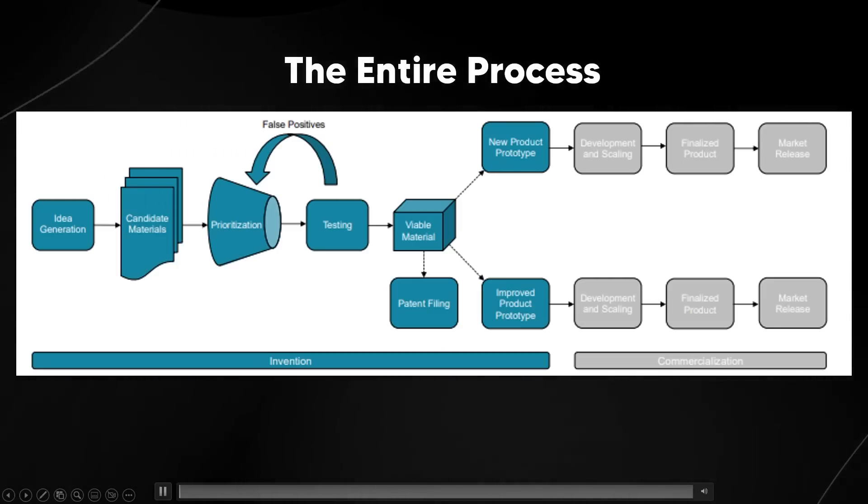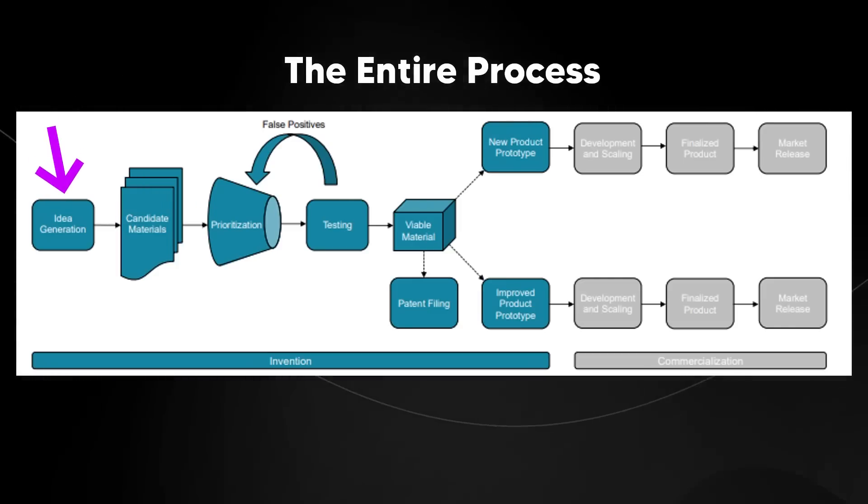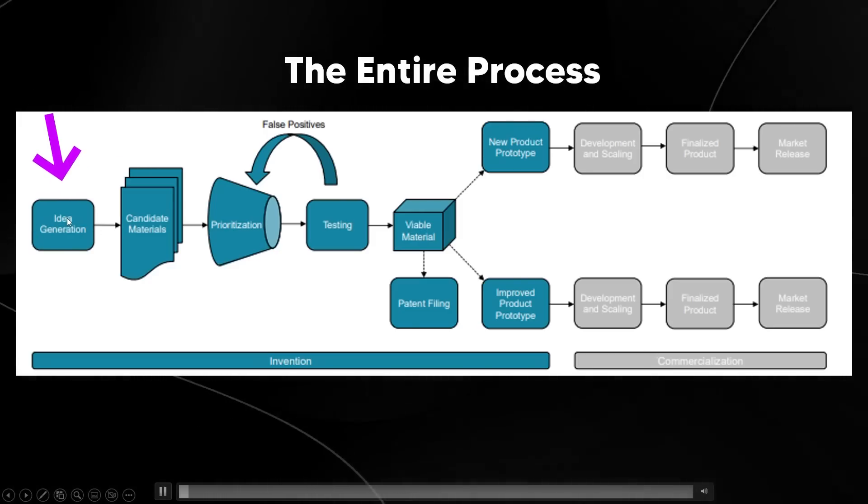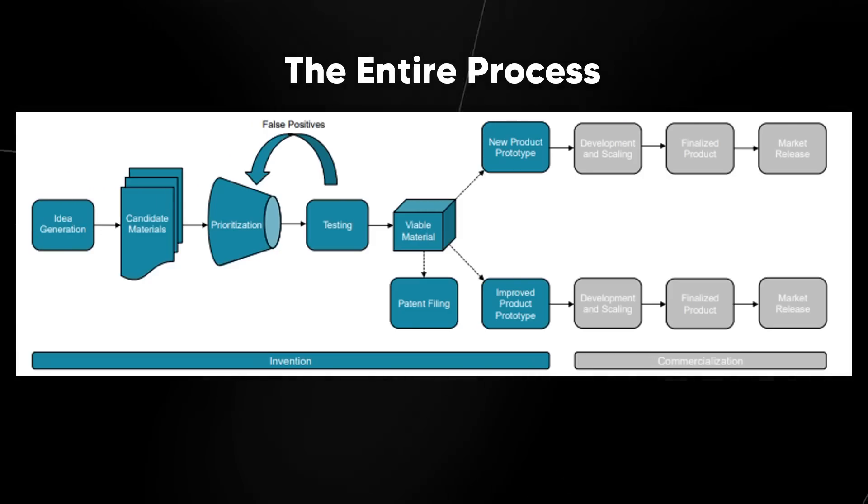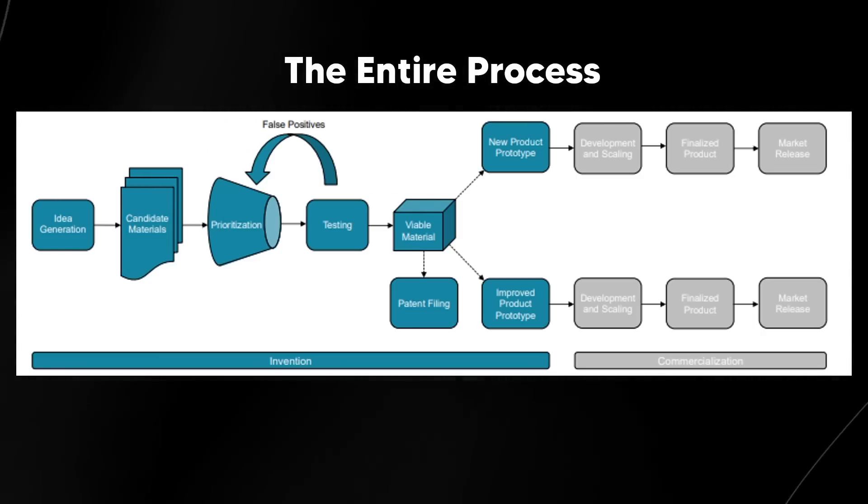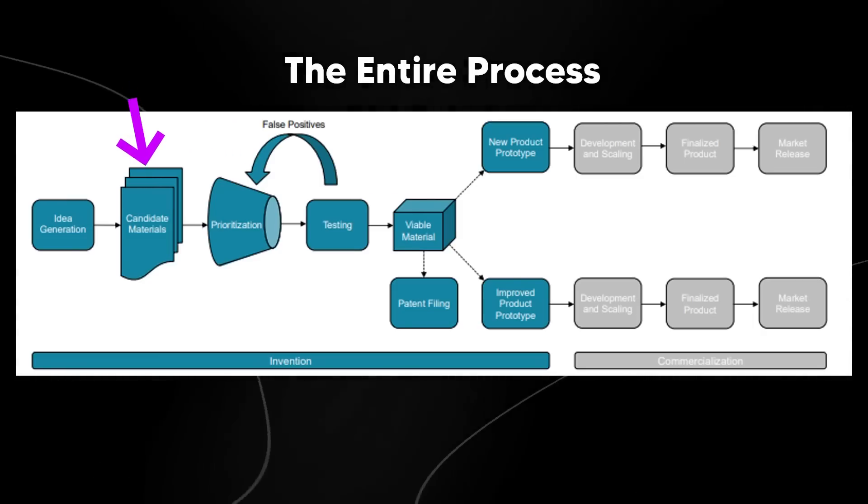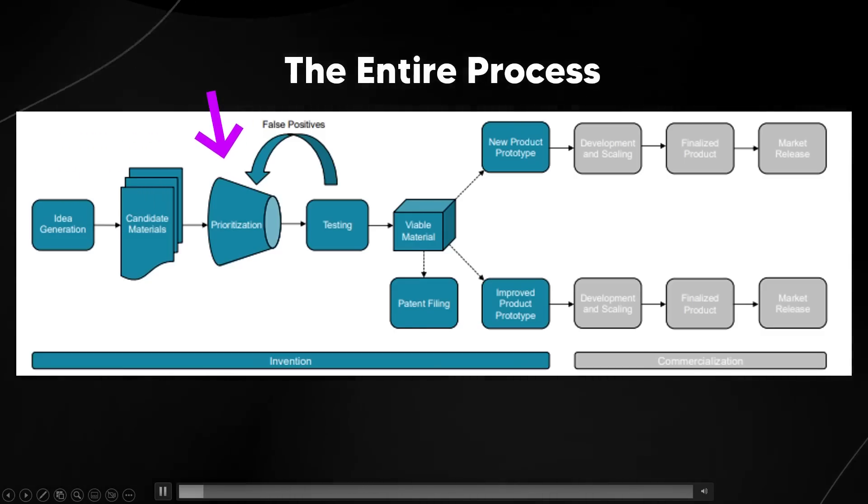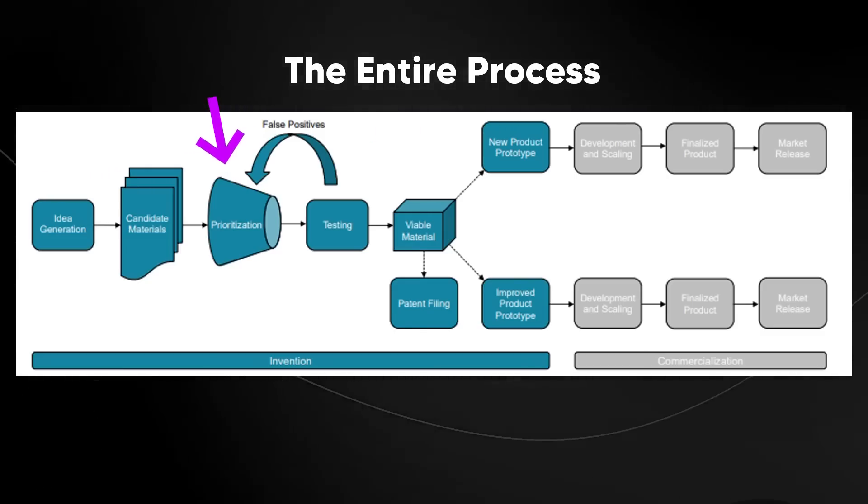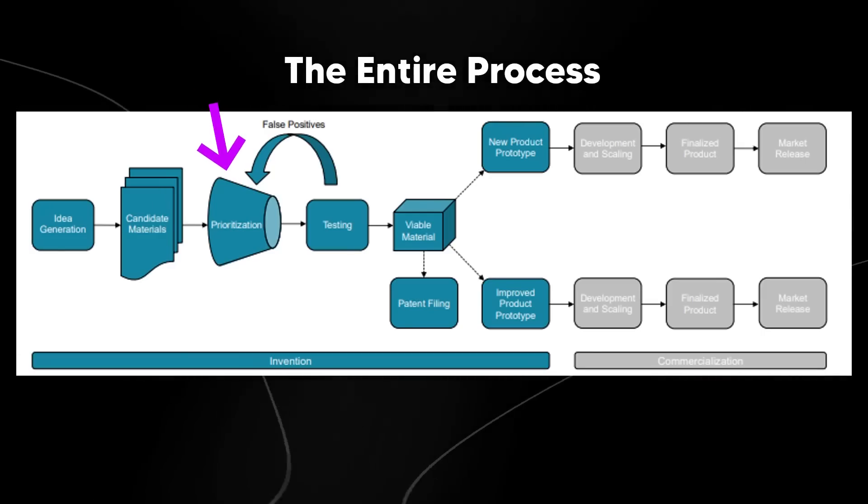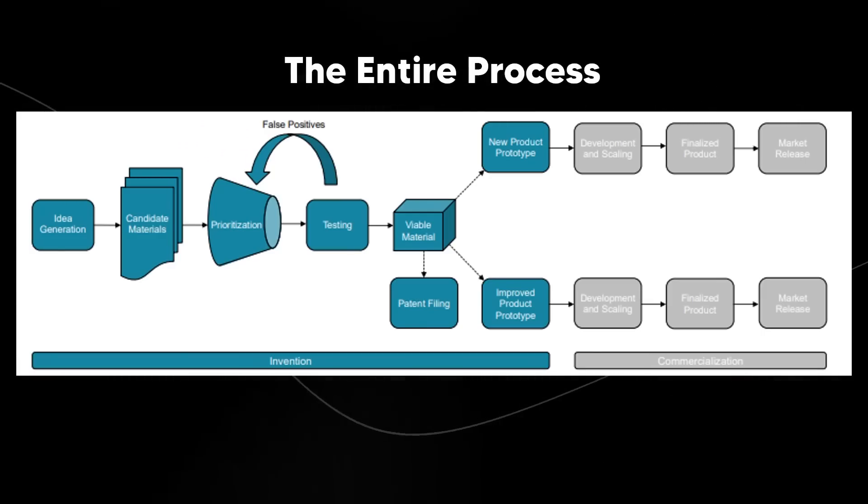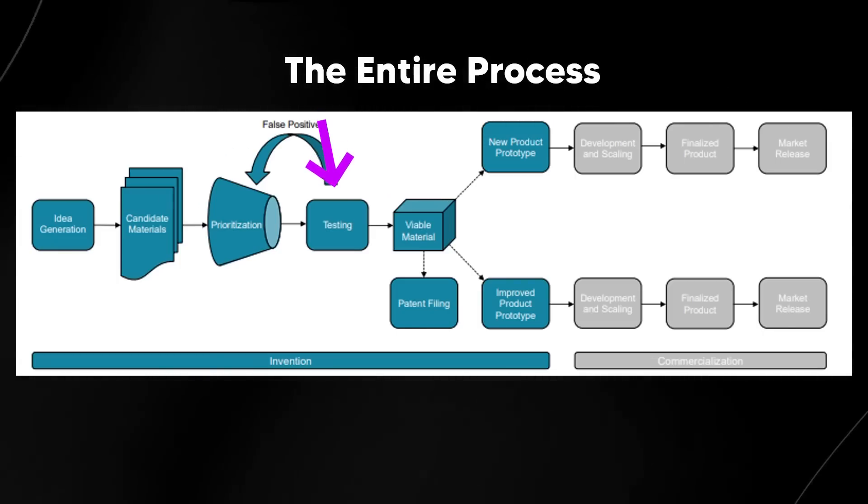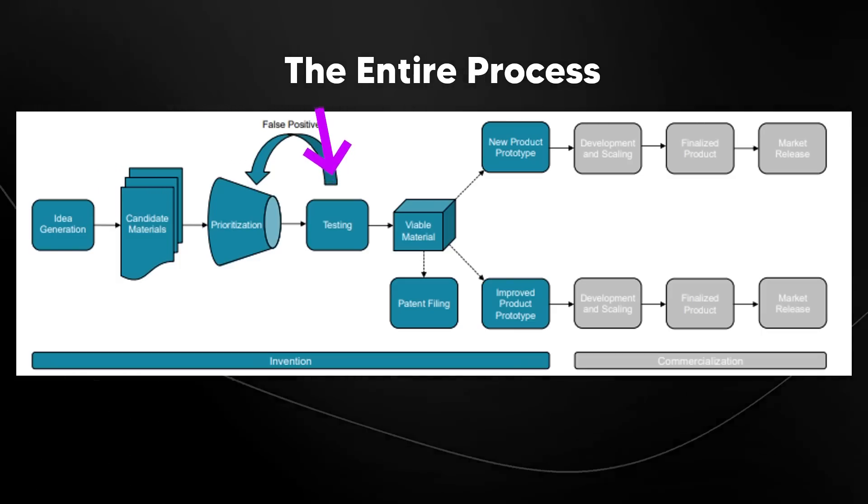In this paper, they essentially talk about the entire process of doing inventions, where you can see that you have the idea generation. This is where scientists come up with new ideas for materials that could potentially meet specific needs or have desirable properties, for example, strength, flexibility, conductivity. Then you've got the candidate materials, where scientists create possible material designs. Then you've got prioritization. Since it's pretty expensive to decide which designs are the most promising and should be tested first, this step is pretty tricky because they have to figure out which materials will actually work, which actually leads to many false positives. Then it moves to testing viable materials, and then after filing patents, you get improved products and commercialization.